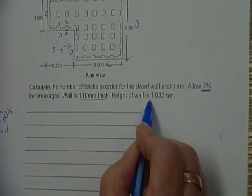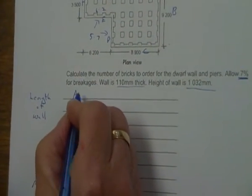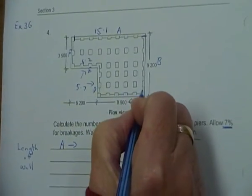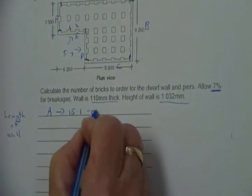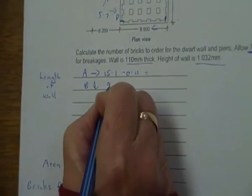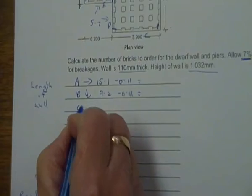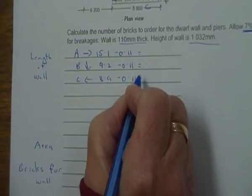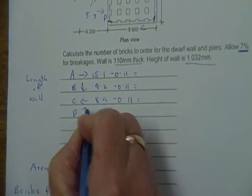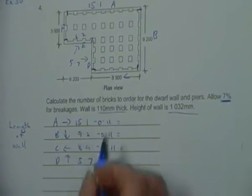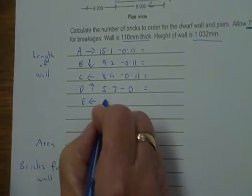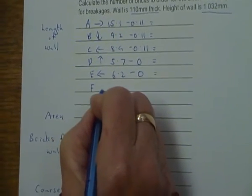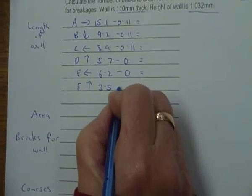So with my intos and overs I'm going like this, into over into over into over, so we're minusing the width of one brick, so 0.11. B, I'm coming down and it's 9.2 minus 0.11. C coming across is 8.9 minus 0.11. D, I'm going up and it's 5.7, and being on the internal corner I'm minusing 0. E is the same, it's going across is 6.2 and it's minus 0. And then F, I'm going up and it's 3.5 minus 0.11.